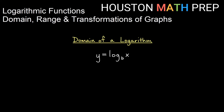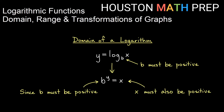So if I think about the domain of a logarithm, I have y equals log base b of x. b is my base. Remember we said the base must be a positive number and it also shouldn't be the number one. If you think of this in exponential form, b to the y equals x, we need this base b to be positive. So if we have a positive base to some power, then the answer must also be positive. The moral of the story is whatever is inside of my logarithm must also be a positive number — that's going to be an important rule for logarithms for domain.